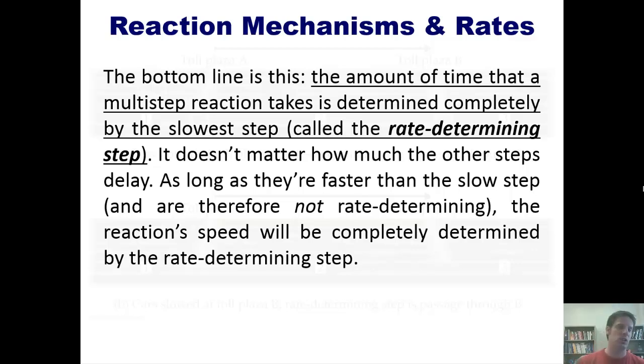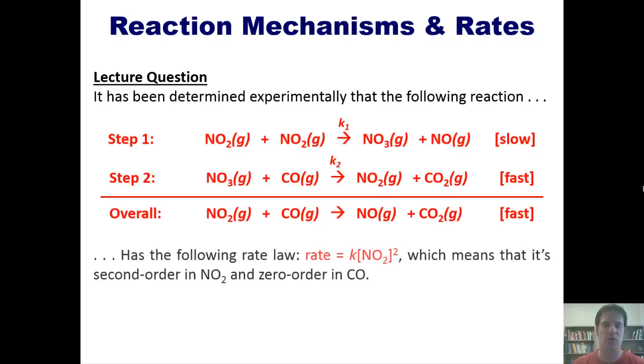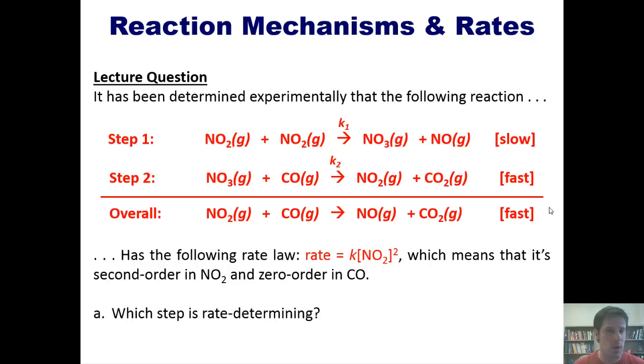That takes us to a beautiful lecture question. It has been determined experimentally that the following reaction has the following rate law, which means that it's second order in NO2 and zero order in CO. So with that knowledge in our brains, here are the questions. Which step is rate-determining? And why does CO not contribute to the rate law? Now, I'm not going to answer these questions for you, but will instead let you think about, ponder them, and answer them on your own.